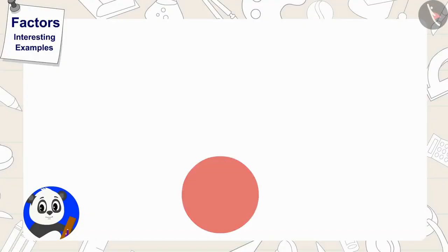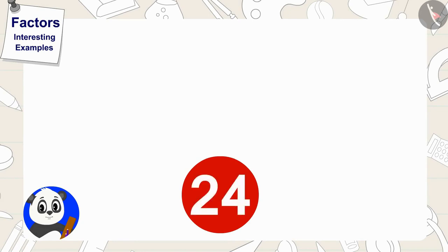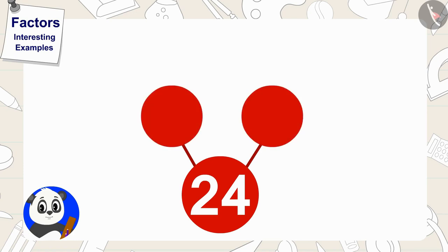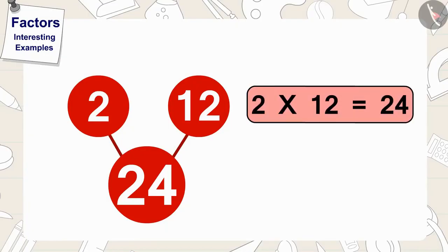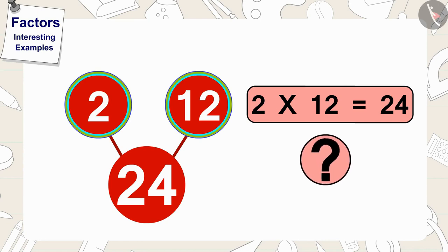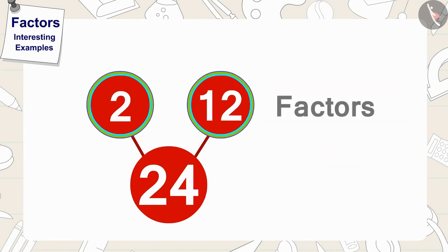He made a circle on a paper and wrote 24 in it. Then he made two lines on the outside of the circle and two circles on the other end of it. In these circles he wrote down the numbers 2 and 12. Because 2 times 12 is 24, so 2 and 12 are factors of 24!